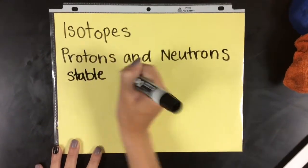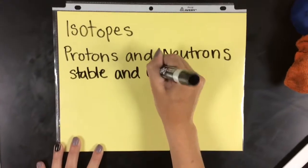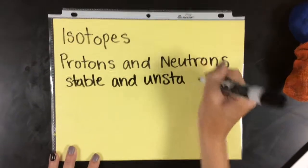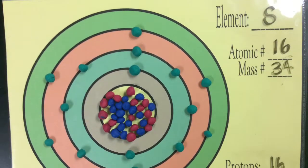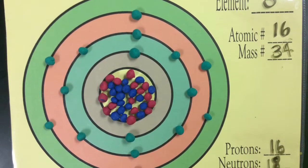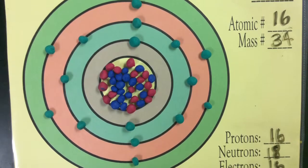Isotopes can come as either stable or unstable. The ones here are stable, but unstable ones will disintegrate at a steady rate. Here is sulfur-34, which has 18 neutrons instead of 16. This increases the atomic mass of that atom to 34.